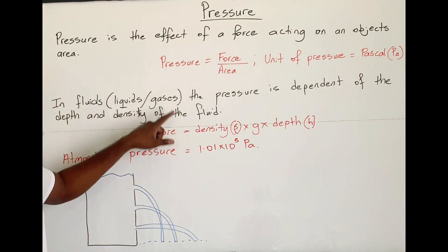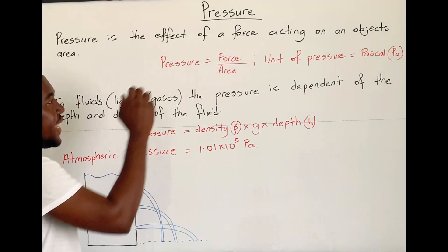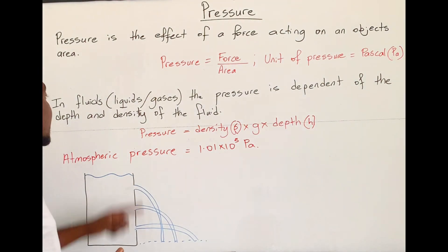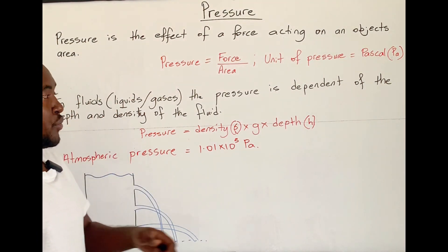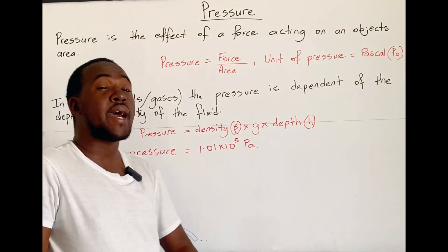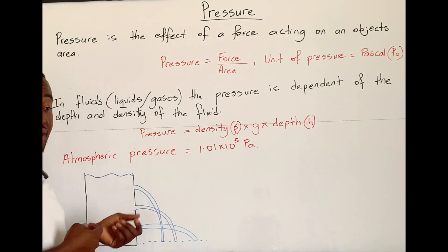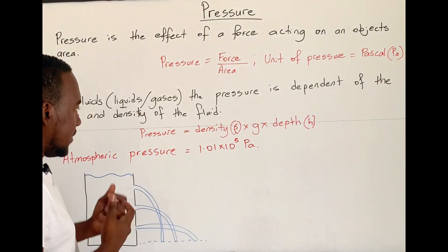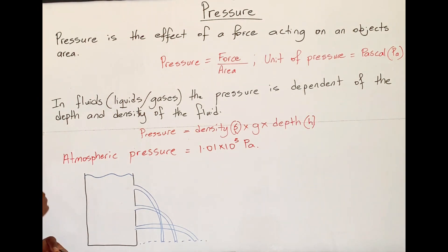Pressure does not only exist with solids — it also exists in liquids and gases, which we collectively call fluids. In fluids, pressure depends not on area or force, but more specifically on depth and the density of that specific fluid. For example, in water, at the top there is less pressure than at the bottom because depth is changing. Comparing fresh water and sea water — sea water is denser due to its salt content, so at the same depth, sea water exerts greater pressure.